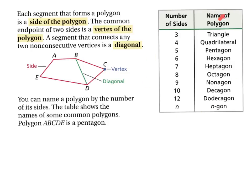Consecutive vertices would just form a side. As you can see from the number of sides and the name of polygons, those are easy. So this polygon A, B, C, D, E would be called a pentagon.